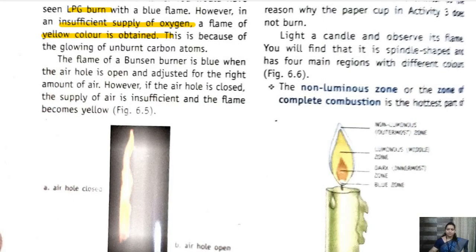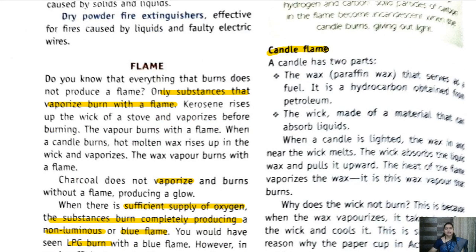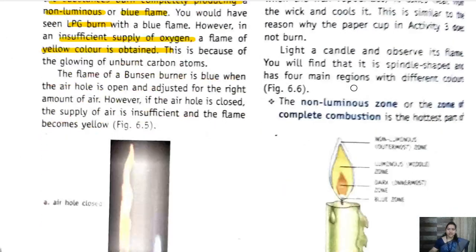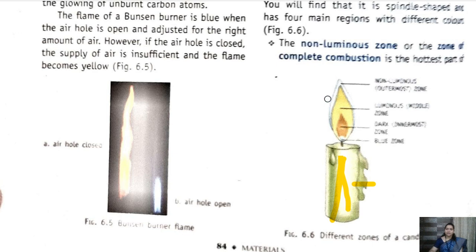Blue flame is due to sufficient oxygen supply; yellow flame is due to insufficient oxygen supply. This is the diagram of a Bunsen burner showing both cases. Now the very important topic is the candle flame. If you observe a candle clearly, you see the wax and a black wick. As soon as you burn the wick, the wax gets vaporized and melted, rises up through the wick, and hence the candle can be burned.